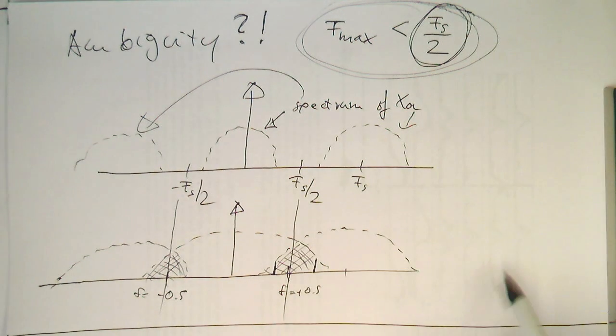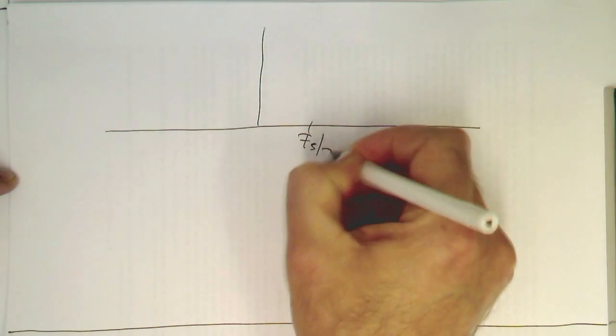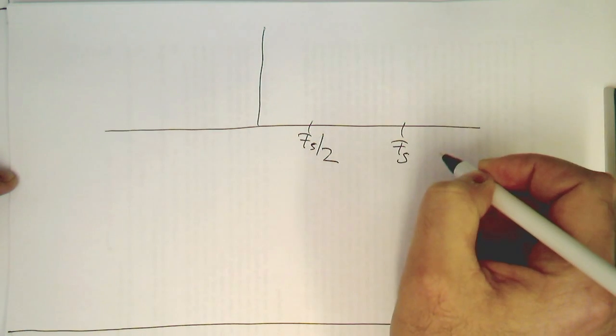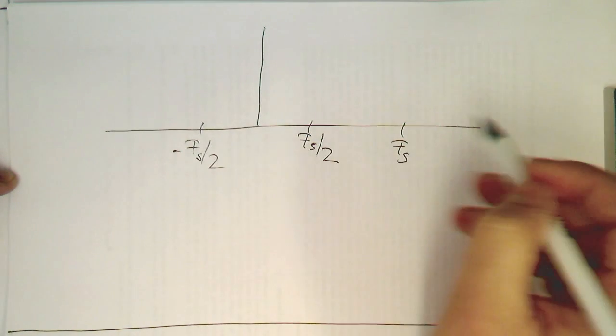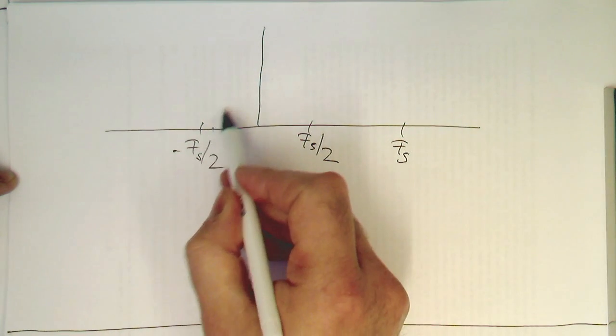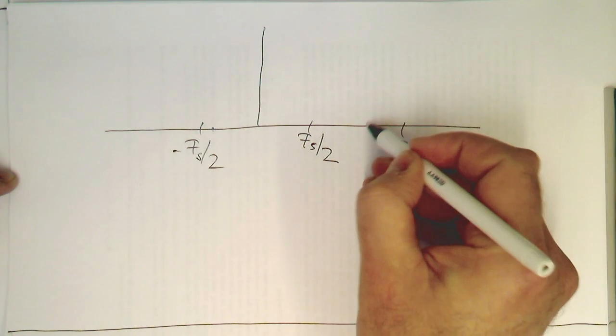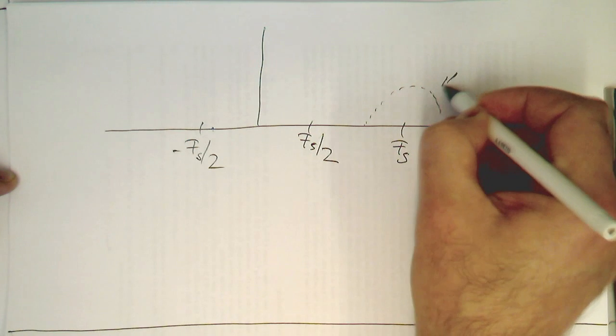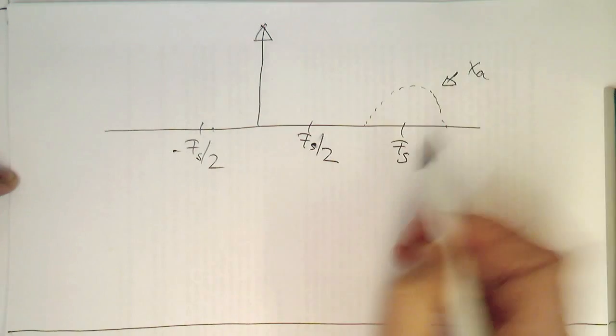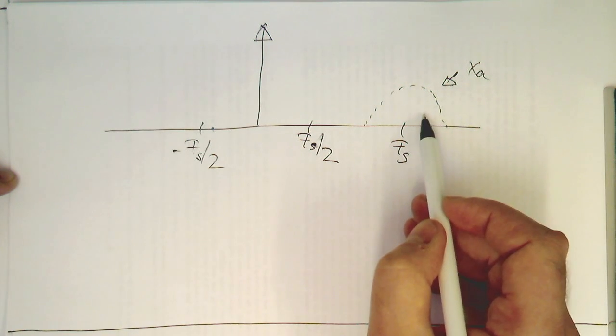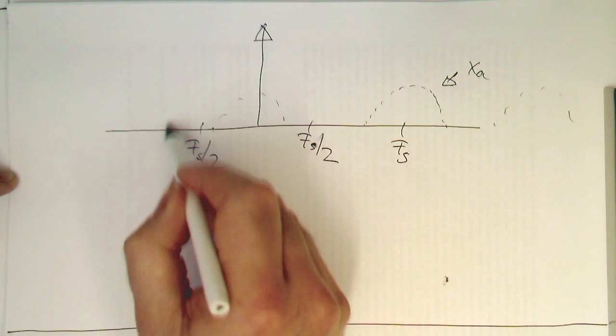But can we also generalize this? Is there a more general rule? And yes, there is. Now let's have a look at a very curious case. Again, we've got our Fs/2, our Nyquist frequency. This is Fs, and this is minus Fs/2. Now, before I had the spectrum always sitting here. But I could also put my analog spectrum here. If I just define my Xa in this region, what would happen then? We know that an analog spectrum would automatically generate copies here, and here, and here.